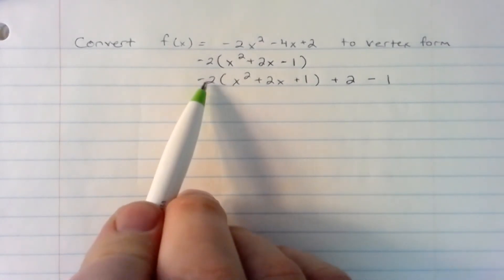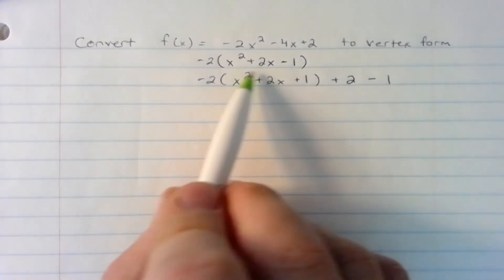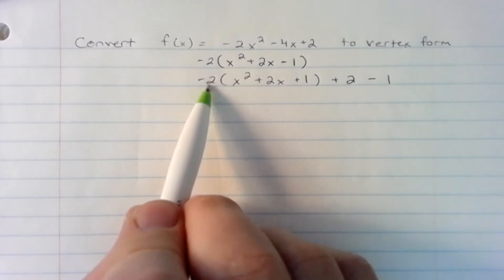I now have the outside of vertex form. Now, the inside: